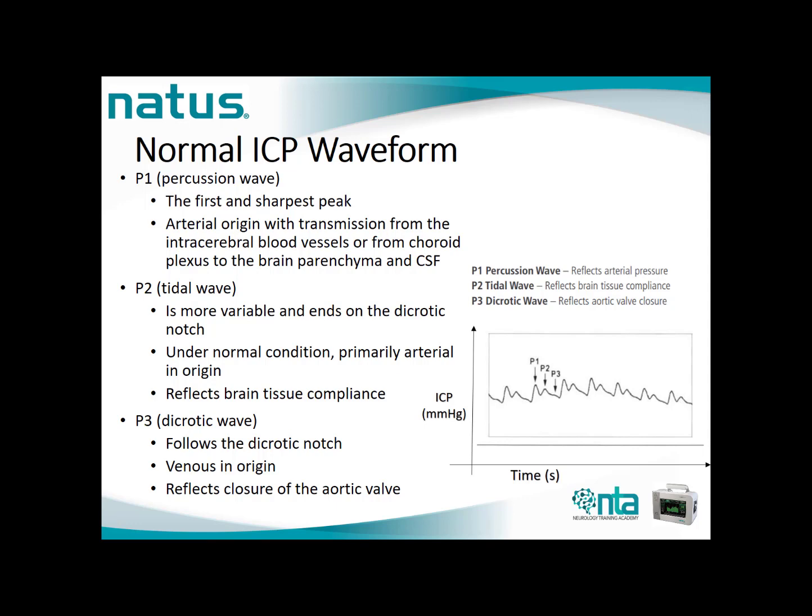P2 is called the tidal wave. It is more variable and ends at the dicrotic notch. Under normal conditions, P2 is also primarily arterial in origin and reflects brain tissue compliance. P3 is called the dicrotic wave; it follows the dicrotic notch, is venous in origin, and reflects closure of the aortic valve. For a normal ICP waveform, P1, P2, and P3 should all be easily visible, with P1 being the sharpest and highest, while P2 and P3 are lesser in amplitude.